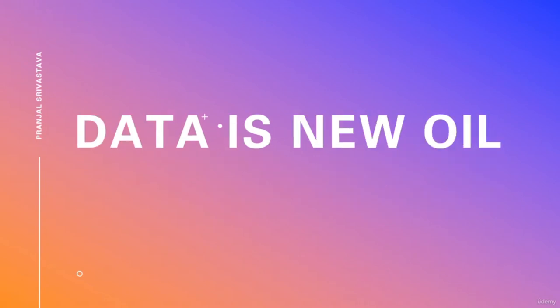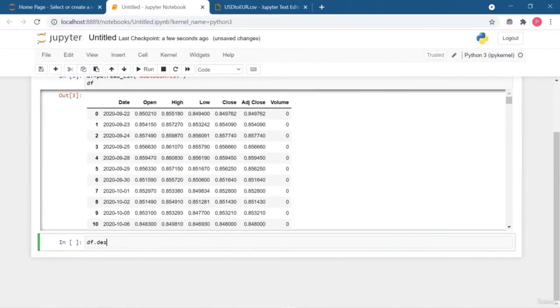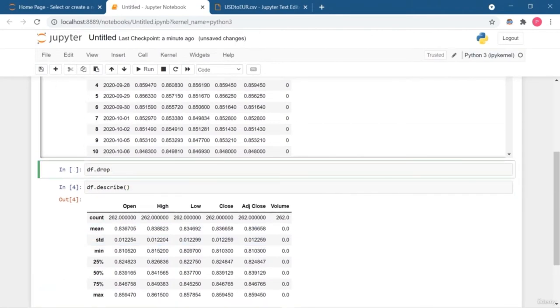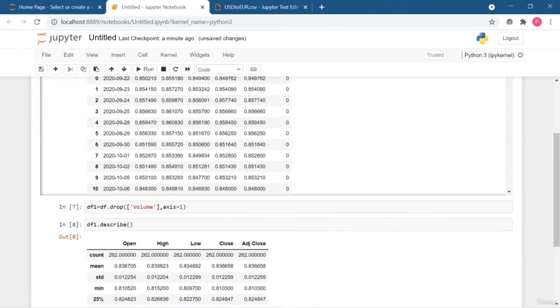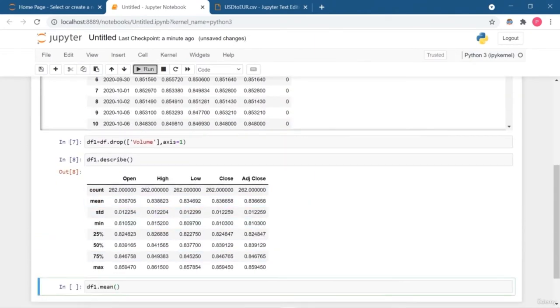We all know that data is the new oil and just like oil, data is also valuable, but if it remains unrefined then it is of no use. In order to make your data into meaningful information, you need to remove some impurities from it. I recommend using the Pandas library to clean messy datasets and make them more readable and relevant. Relevant data is very important in the field of data science, data analysis, and even machine learning.